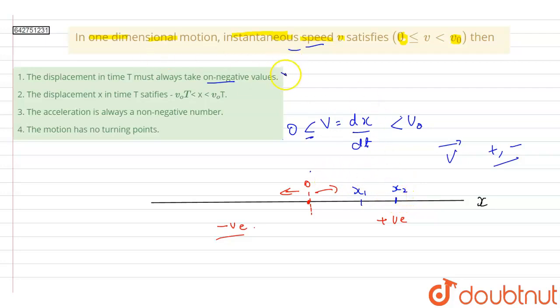So this means option one is incorrect. Option two is the displacement x in time t satisfies x between minus of v0t to v0t.